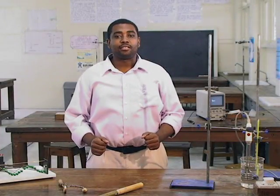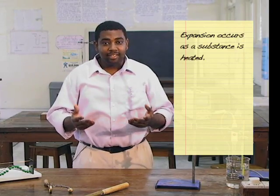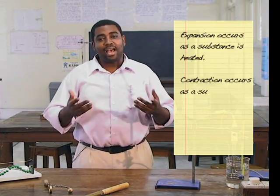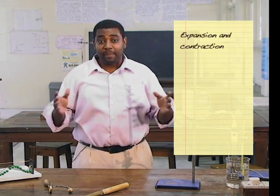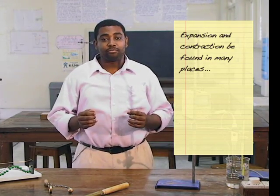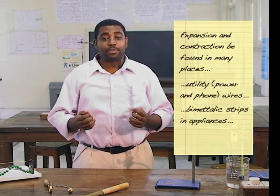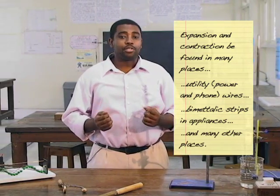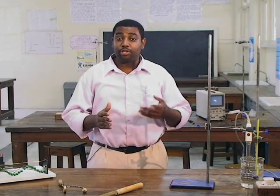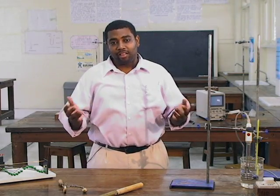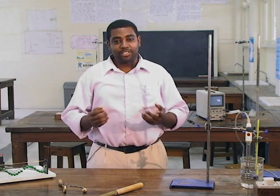That's all for this lesson. Remember that expansion occurs as a substance is heated and contraction occurs as a substance cools. Remember also that there are many practical examples of expansion and contraction. For example, utility wires and also bimetallic strips. Look around your house and see if you can find any examples of expansion and contraction in your home, your school and other surroundings. Until next time, I'm Marvin for CXC Physics in Focus.